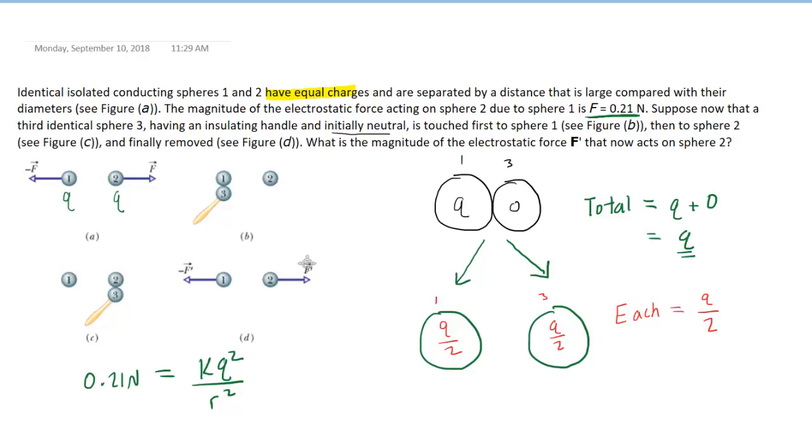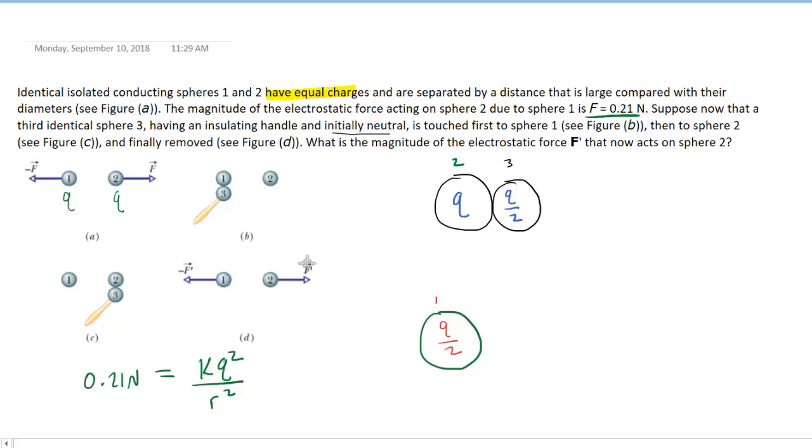Now, this is a result that we're going to use for the next phase of this analysis, because now we're going to bring spheres three and two together, as indicated in figure C. So let's clean this diagram up just a little bit here. Sphere two had a charge initially of Q, and now sphere three is no longer neutral. It carries a charge of Q over 2.